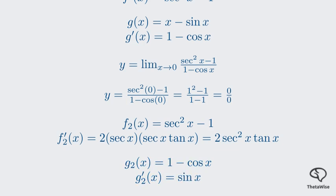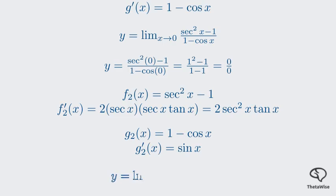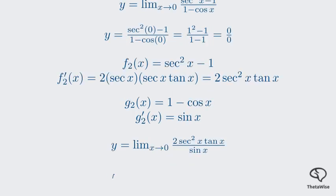Now, let's put it all together for our third limit. The limit is now as x approaches 0 of 2 secant squared x tan x divided by sin x. Notice that tan x is the same as sin x over cos x. Let's make that substitution. This is a common algebraic step to simplify trigonometric limits. By replacing tan x with sin x over cos x, we can now see a common factor of sin x in both the numerator and the denominator, which we can cancel out.